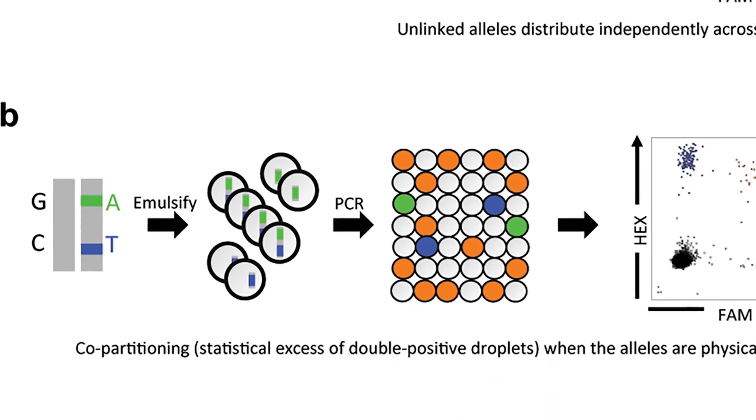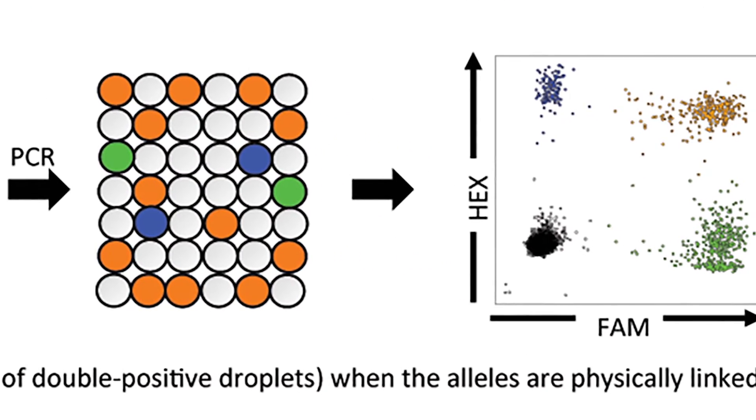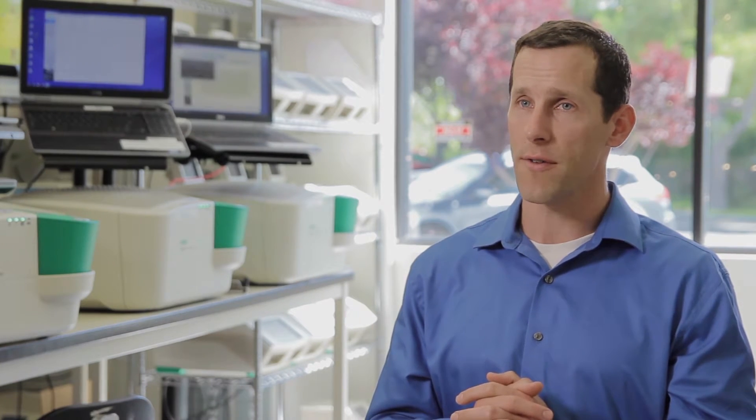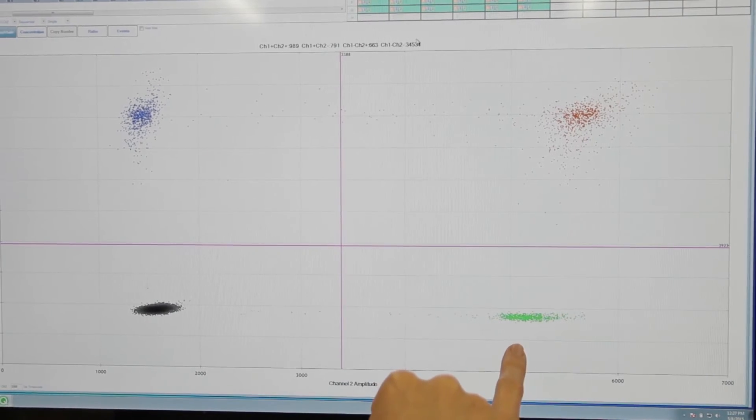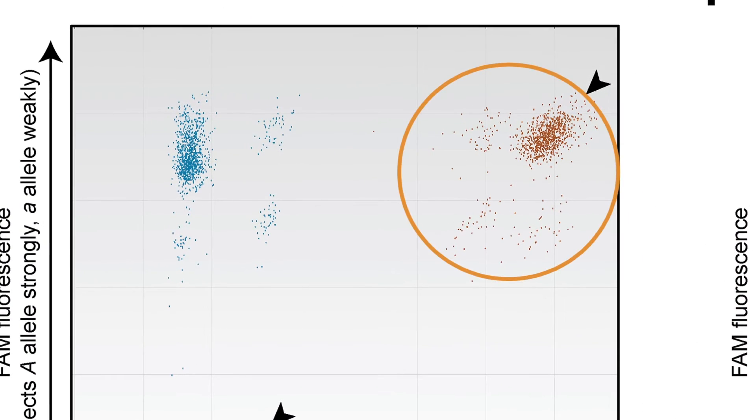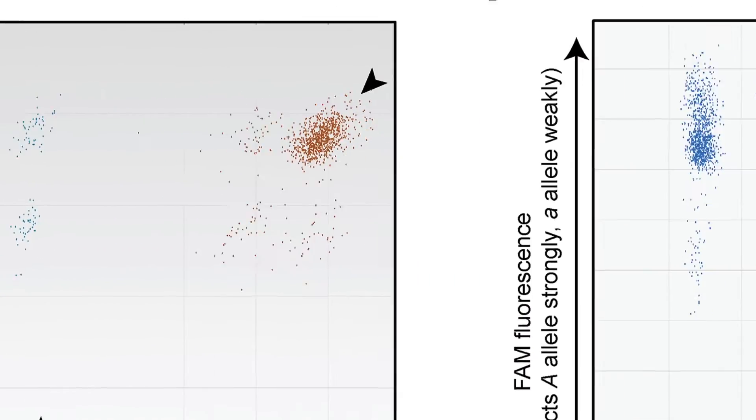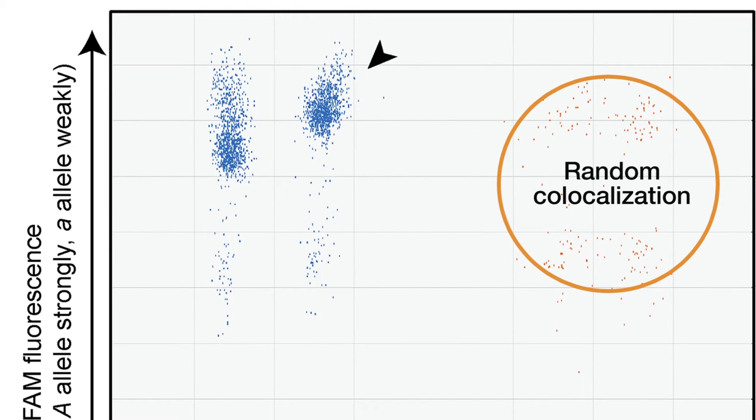'Drop Phase is a technique that we developed in collaboration with Harvard Medical School and Steve McCarroll. It relies on the very simple principle that if you partition a sample — if you have a stretch of DNA which contains two markers, and those two markers are tethered together by a stretch of DNA — when they find their way into a droplet, that droplet will be positive for both markers. What Drop Phase does is it actually measures the number of droplets that are double positive for both targets of interest, above and beyond what we would expect from random distribution of these targets amongst the droplets. By measuring that, we can actually confirm that the two markers are in fact linked on the same stretch of DNA, which effectively is phasing the genome.'